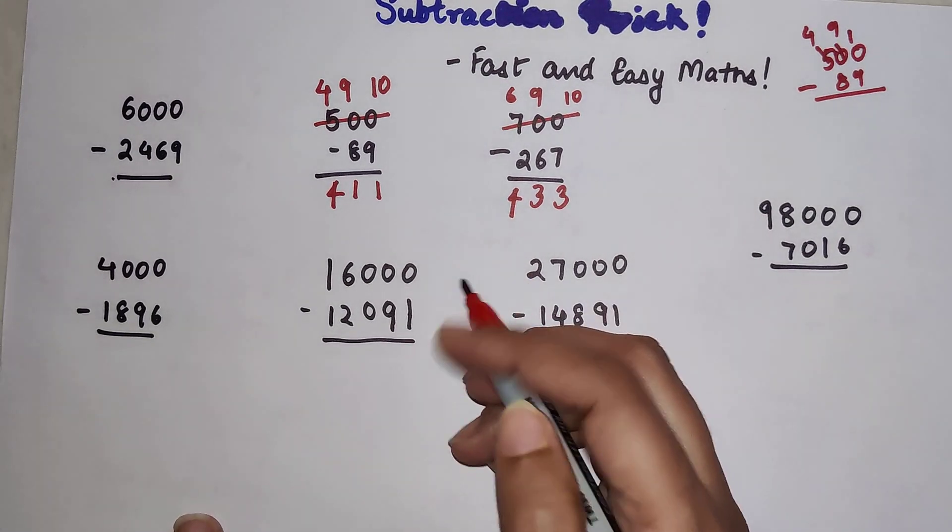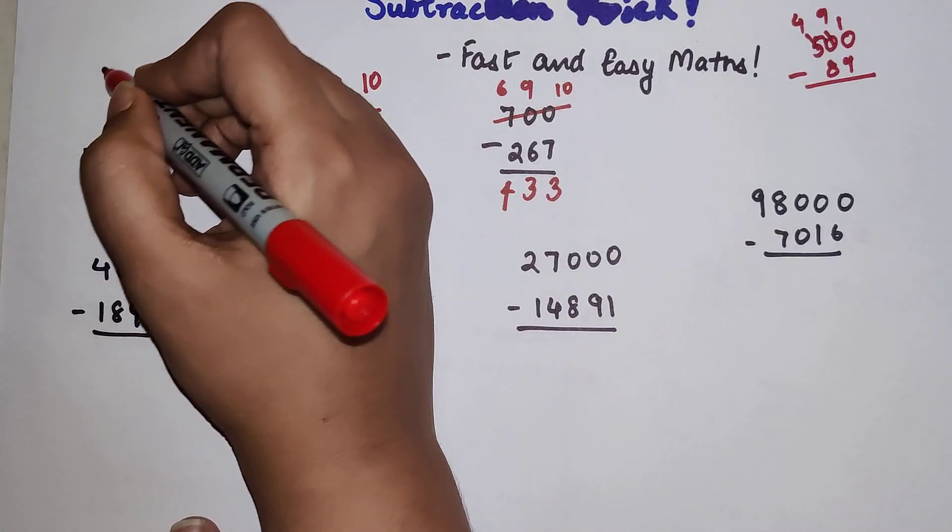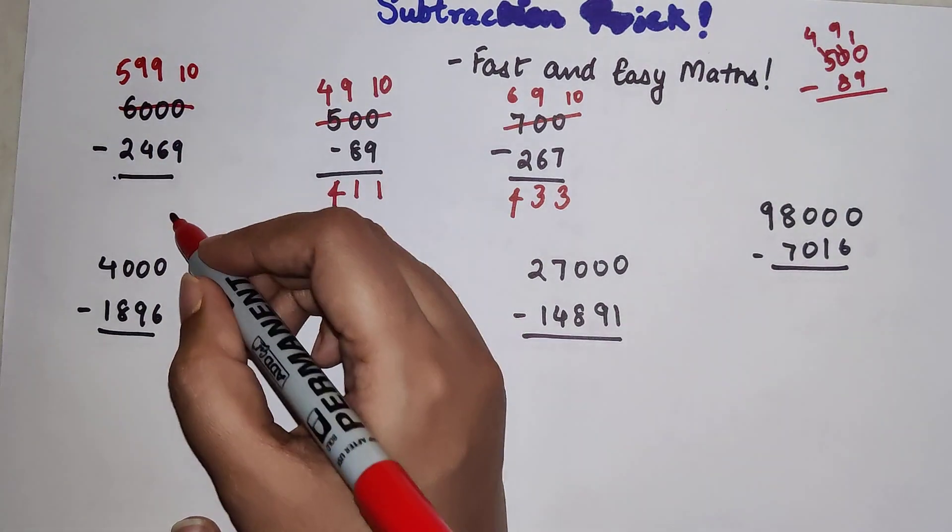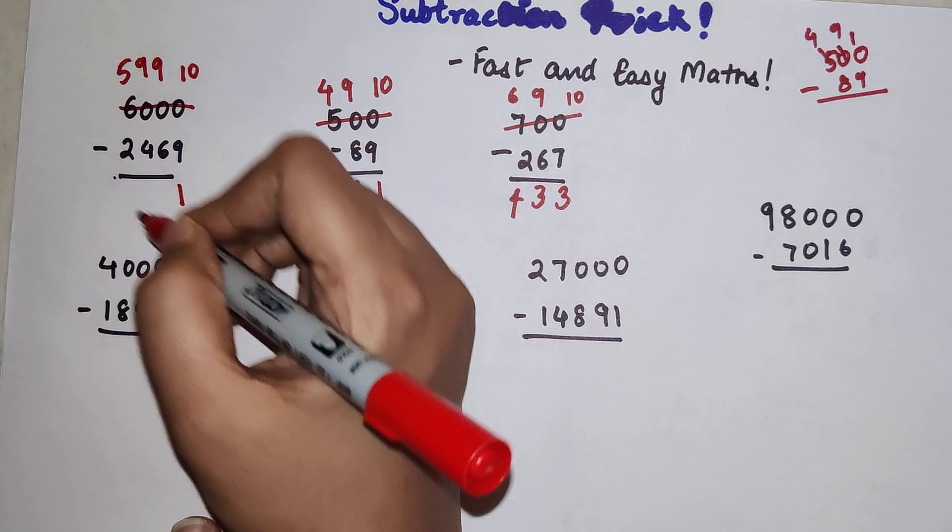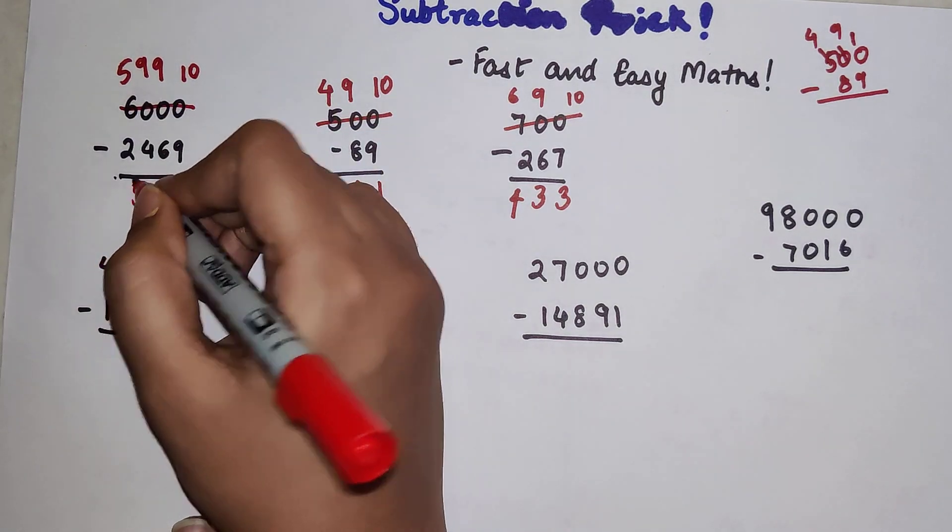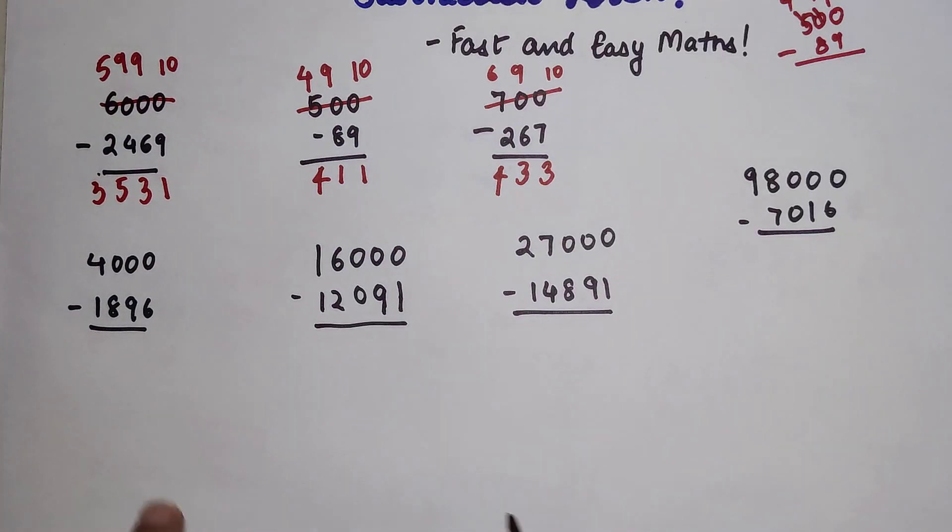So now next one we do this one. So we have 5, 9, 9, and 10. So 9 taken from 10 you get 1, 6 taken from 9 we get 3, 4 taken from 9 gets you 5, and 2 taken from 5 gets you 3. So your final answer is 3531 for this particular question.